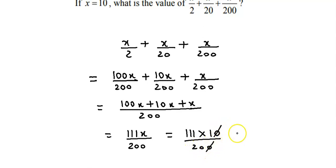This cancels off. Now if we reduce this, or rather we could just perform the division. So 111 divided by 20 will be 5.55. So this is the required value of the given expression.